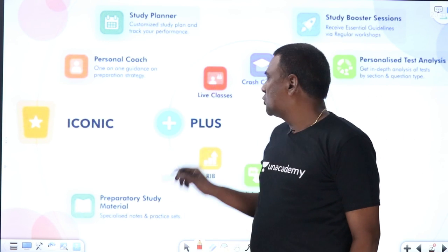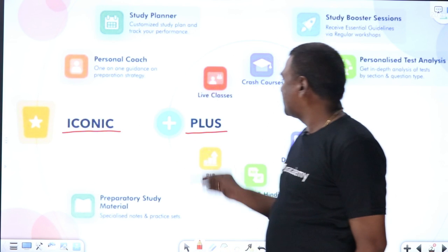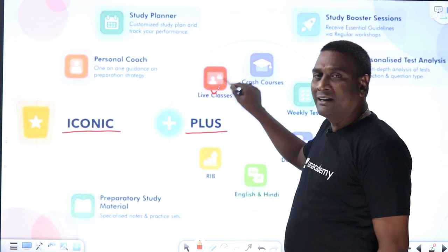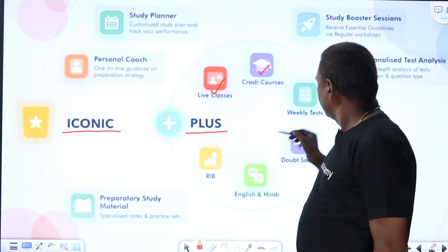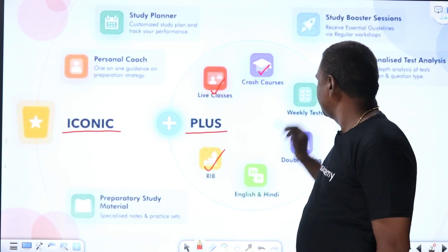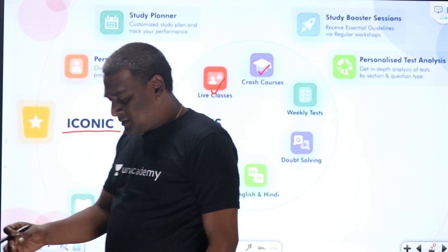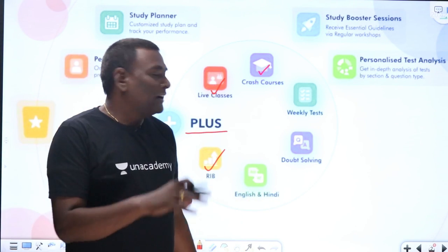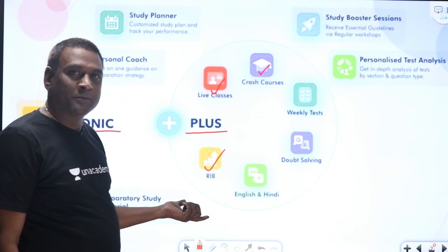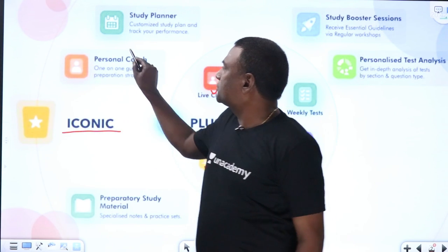In the academy, there are two kinds of paid platforms: Plus and Iconic. In Plus, you get live classes, crash courses, rank improvement badges, weekly tests, doubt solving — everything. Plus is a subset, and in the Iconic subscription, you get everything from Plus along with a personal coach.